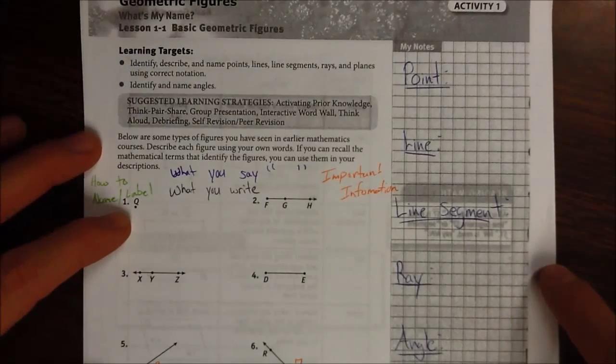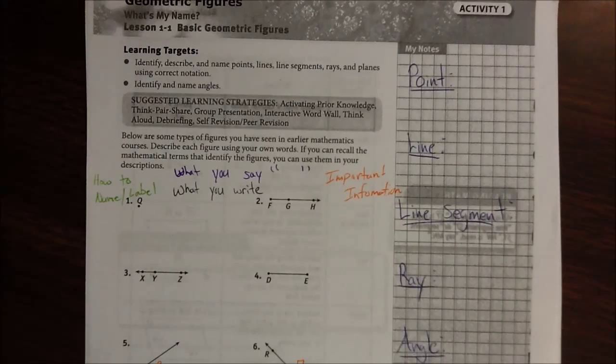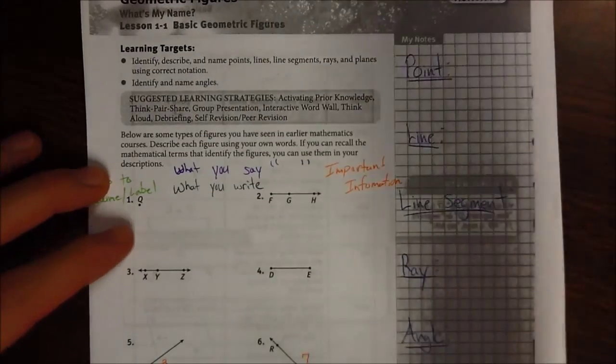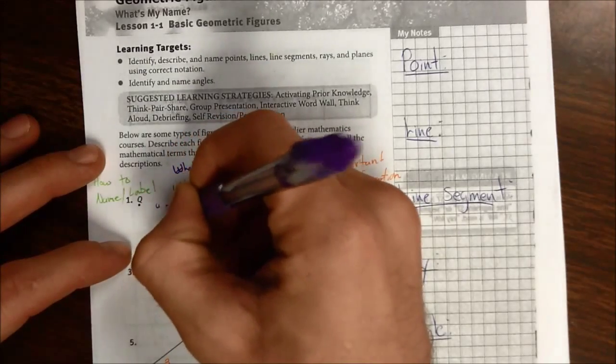Number one, we have this geometric figure here. It's represented by a dot. That is a point. And so what you would say when you see this, you would say point Q.